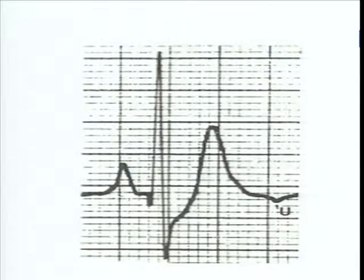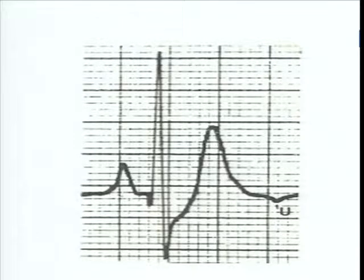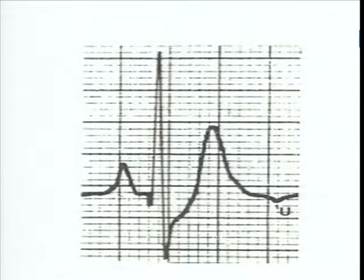Widened QRST angle is a sign of ischemia. You can have non-specific T wave inversions — in females, patients with mitral valve prolapse, and in hypothyroidism you can get non-specific STT changes. If you have suspicion, get an echo and a treadmill test done.